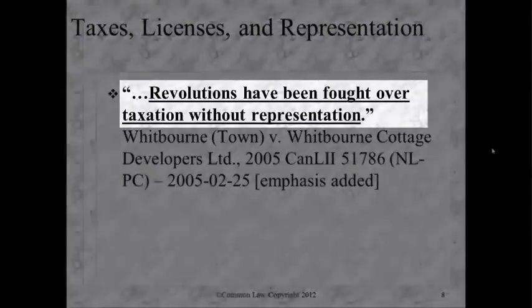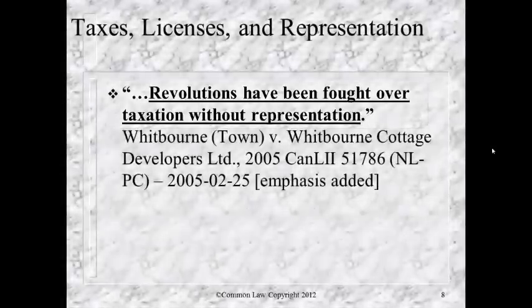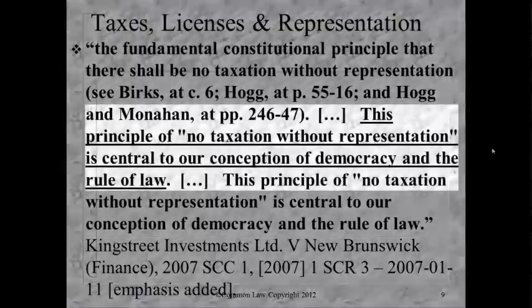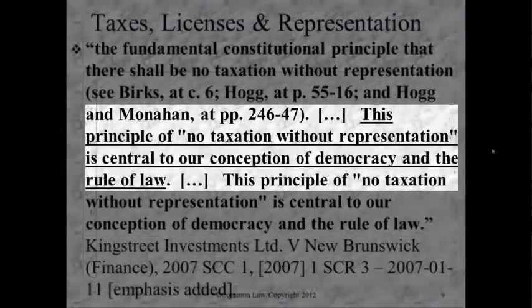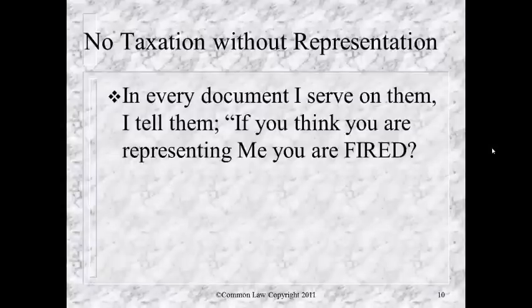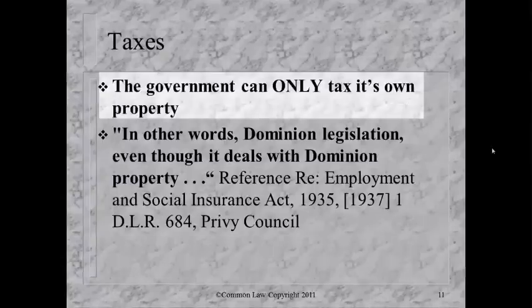This is another Canadian court case. Revolutions have been fought over taxation without representation — the whole War of Independence was fought over it, and the English Glorious Revolution with Oliver Cromwell was the same thing. Whether they had the slogan or not in the Magna Carta in 1215, it's obvious that's what was going on. The underlined part says this principle of no taxation without representation is central to our conception of democracy and the rule of law. There is no taxation without representation — they have to represent you. The government can only tax its own property.